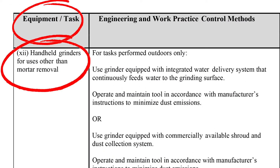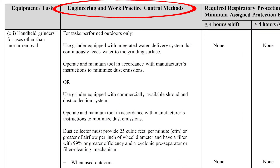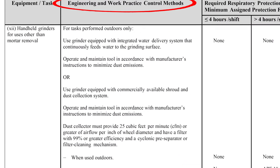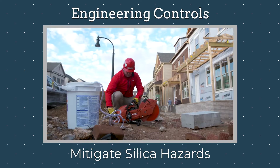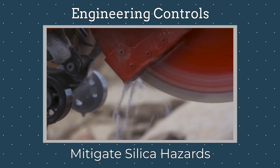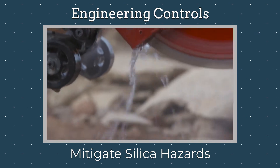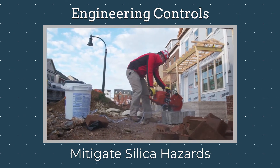The first column covers the equipment being used and the task it is being used for. The next column provides engineering and work practice control methods to implement. It tells us the location of the task and the necessary controls for that location.